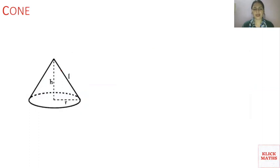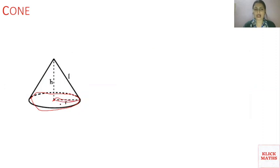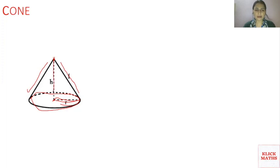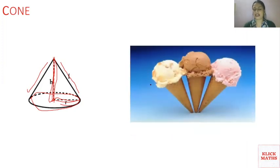The next shape is a cone. A cone has a circular base, and because the base is a circle, it has a center and a radius. A cone has one vertex — the meeting point of two lines — and there are two slant sides and a slant height. The distance from the vertex to the center of the base is the height of the cone. An ice cream cone is in the shape of a cone.